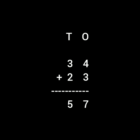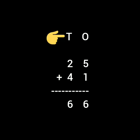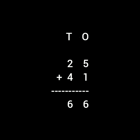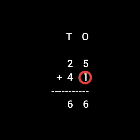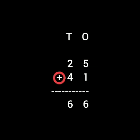Now let us see the second example: 25 plus 41. Under the 10's column you can see 2, and under the 1's column 5. Again downside, in the 10's column 4 and in the 1's column 1. So let us count them together. We will start counting from the left hand side, which means from the ones side.